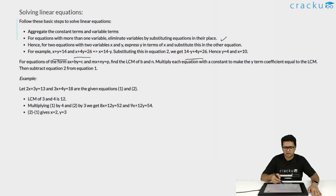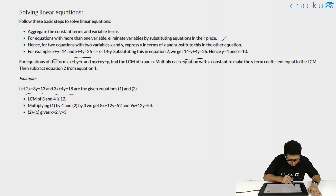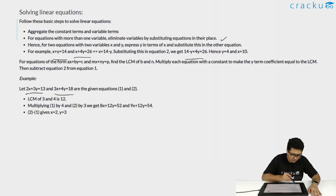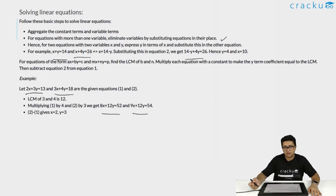This is basically how you solve a linear equation in two variables. When it is three variables, you will be given three equations to solve — otherwise, it is mathematically impossible. Let's look at another basic example: given 2x + 3y = 13 and 3x + 4y = 18, since LCM of 3 and 4 is 12, we multiply equation 1 by 4 and equation 2 by 3. We get 8x + 12y = 52 and 9x + 12y = 54. Subtracting equation 1 from equation 2, we get x = 2 and y = 3.